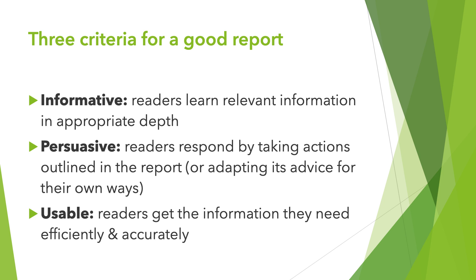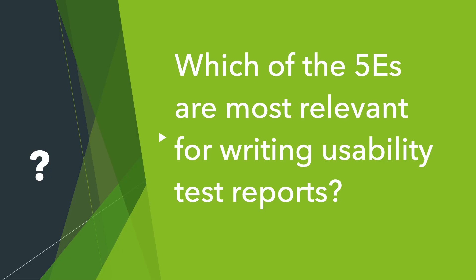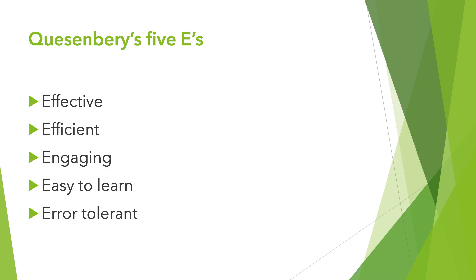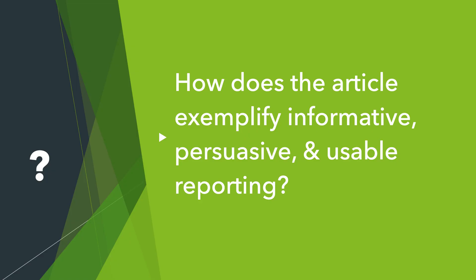We have a framework for that: Quezenberry. Which of the five E's from Quezenberry are most relevant for writing usability testing reports? I'm not sure any of these are irrelevant for testing reports. The way you proportion the five E's will be a little bit different for each report. The one that would be least relevant in an actual work situation is easy to learn, because reports would be written every couple of months or every month depending on how spread out your testing was, so people working with the reports would get used to them over time.